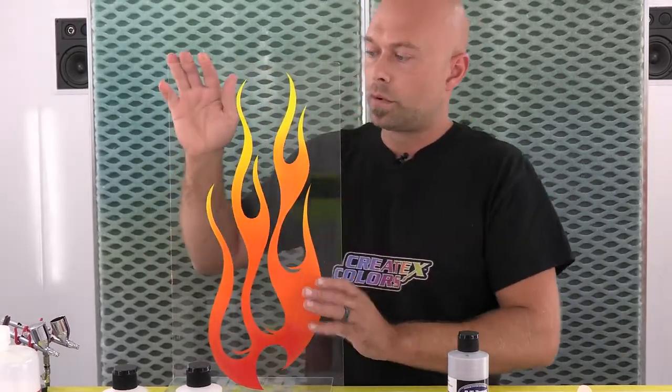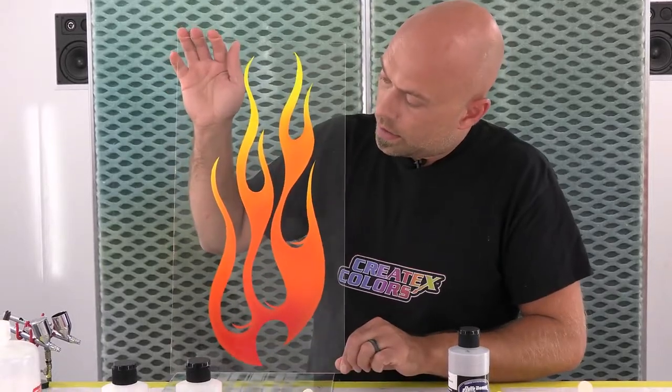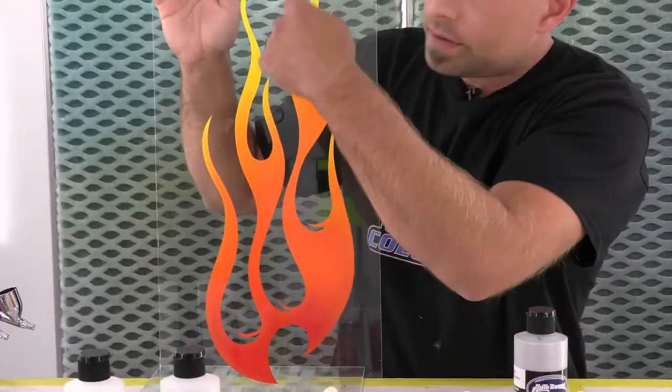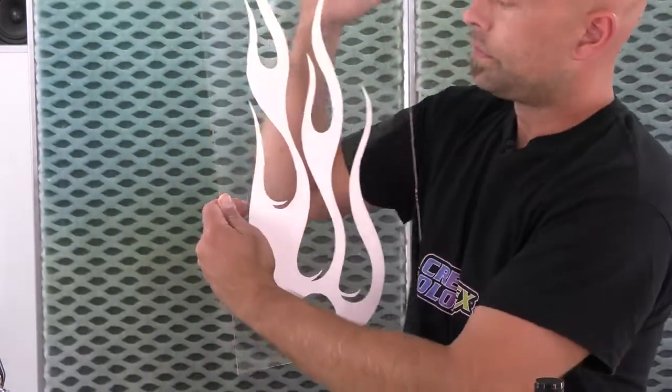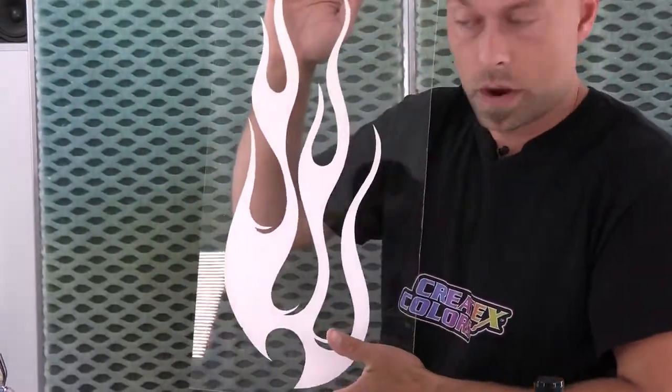So again, you can see reverse painting. This is the front side, and we have a nice fade from the red to the white hot yellow tips here. And you can see on the back side is what that looks like when we paint it the reverse way.